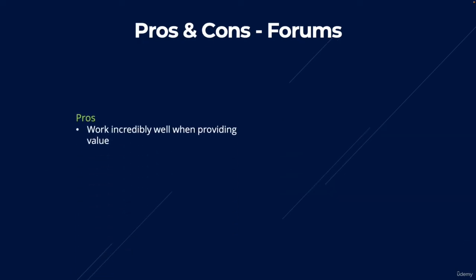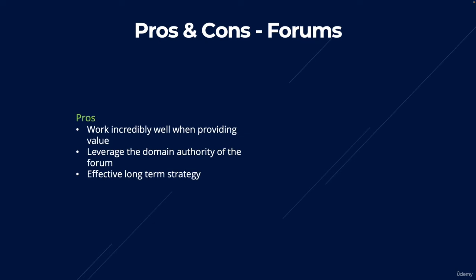The pros of forums: the first pro is that they work incredibly well when you provide value upfront. If you join a forum, provide value, and earn people's trust, they will trust what you say, and that can result in a lot of affiliate commissions. The second pro is you can leverage the domain authority of the forum. Sites like Reddit and Quora have tons of domain authority — Google already trusts them, meaning forum threads rank highly in Google, generating free traffic without investing time in your own SEO. The third benefit is that it's an effective long-term strategy.